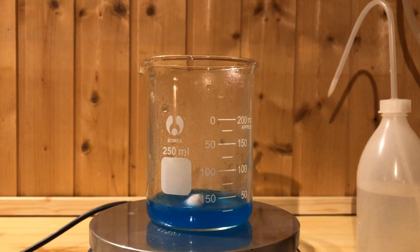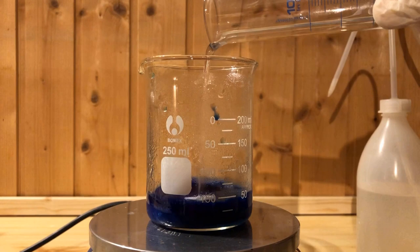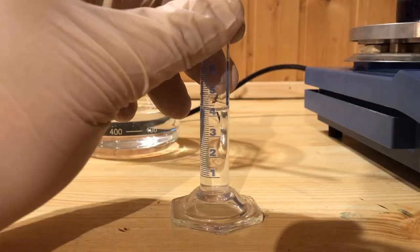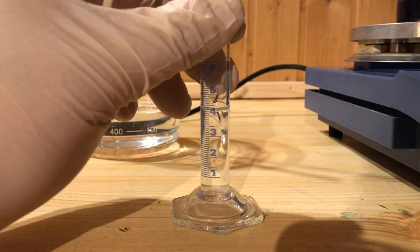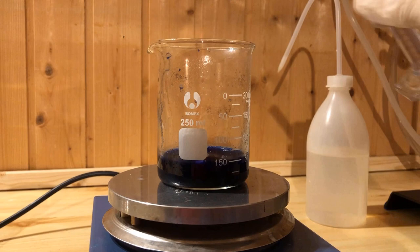After the solution has cooled, 20 milliliters of 25% ammonia solution is added. 4.3 milliliters of the prepared sodium hydroxide solution is measured in a graduated cylinder and also added to the solution.